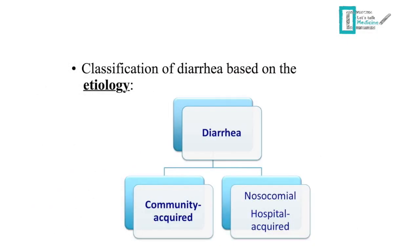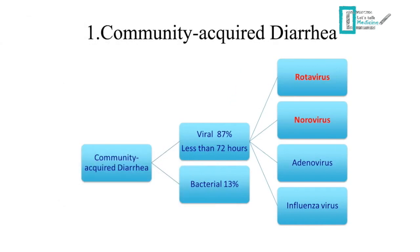Another classification of diarrhea is according to etiology. We can classify acute diarrhea into community-acquired and nosocomial or hospital-acquired diarrhea. Community-acquired diarrhea can be classified by etiology into viral or bacterial causes. Viral causes are the most common cause of community-acquired diarrhea.